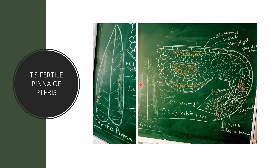If we cut a transverse section of the leaflet or pinna of Pteris, we can see its anatomy. The outermost layer is called the epidermis, protected by cuticle, and the lower epidermis layer is also protected by cuticle. There are midrib extensions made up of thick-walled tissue called sclerenchyma tissue. The midrib part is made up of xylem surrounded by phloem. Between the upper and lower epidermis is the mesophyll tissue, which contains chloroplasts and helps in photosynthesis.